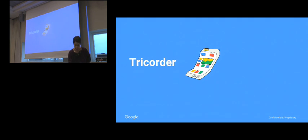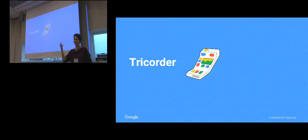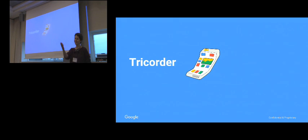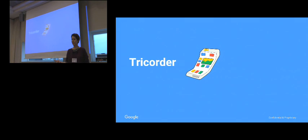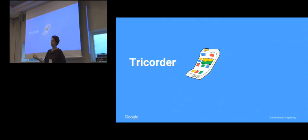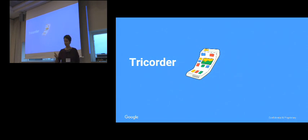First, Tricoder. If you are a Trekkie, you may have seen this before — a Tricoder is a thing from Star Trek. I didn't know this starting on the Tricoder team. The idea is that you point it at things and it tells you what they are. So you are in code review, looking at a patch or a change or change list, and the robots help you say what they're seeing.